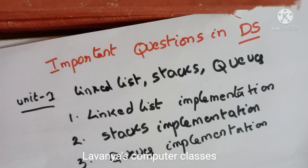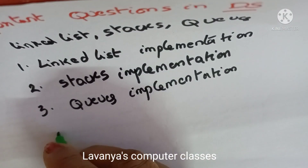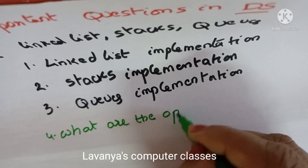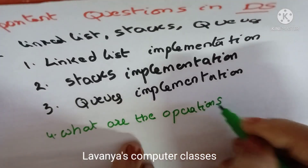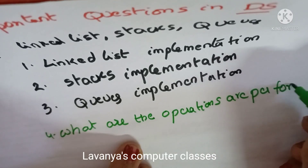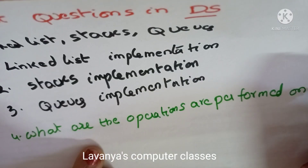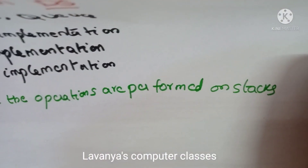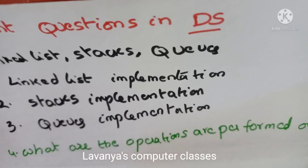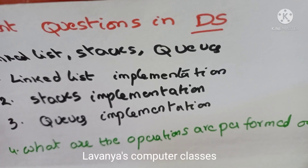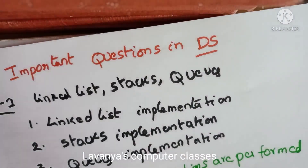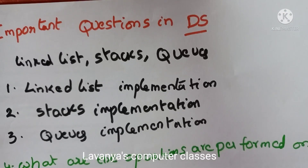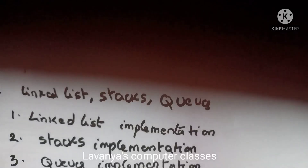After the implementations, there are theory questions. What are the operations performed on stacks? For stacks, we have to write insert operation, deletion, creation, and what is overflow and underflow — everything we have to explain. Similarly, what are the operations performed on queues?